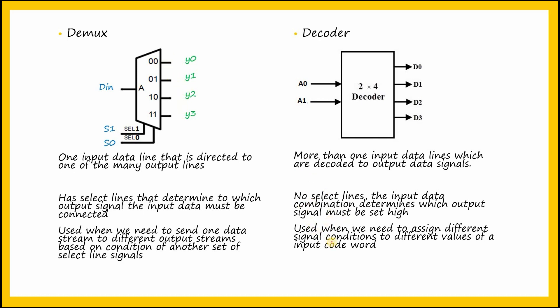A decoder is used when we need to assign different signal conditions to different values of input codeword. As an example, we saw the 7-segment display decoder where BCD inputs of 4 bits wide had to assign 7-bit output code to the 7-segment display.